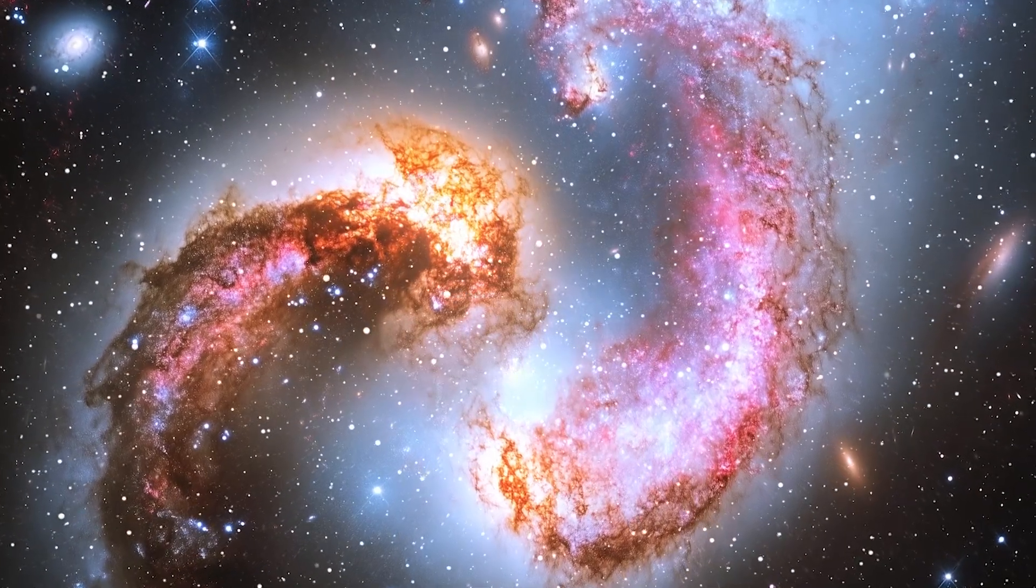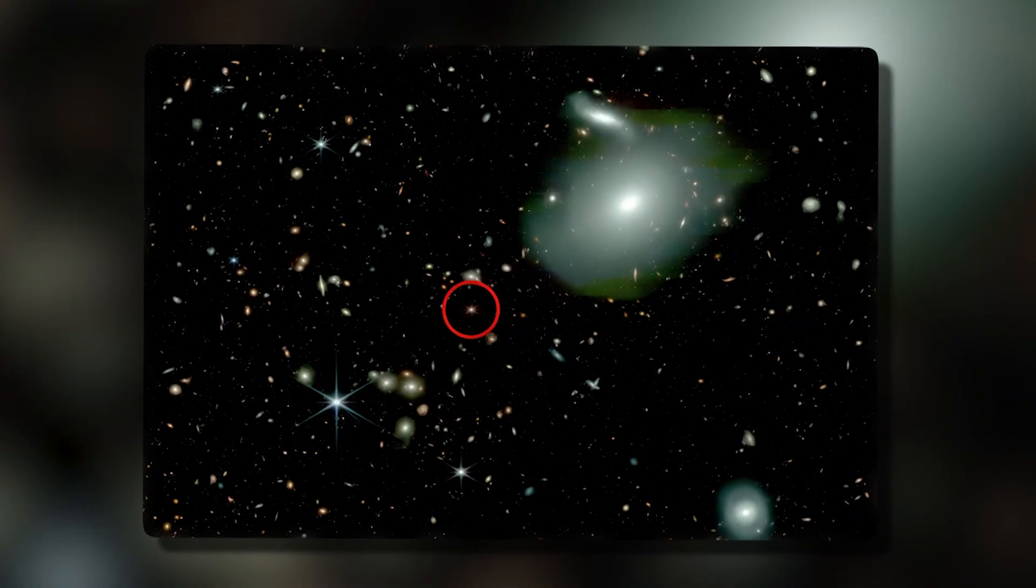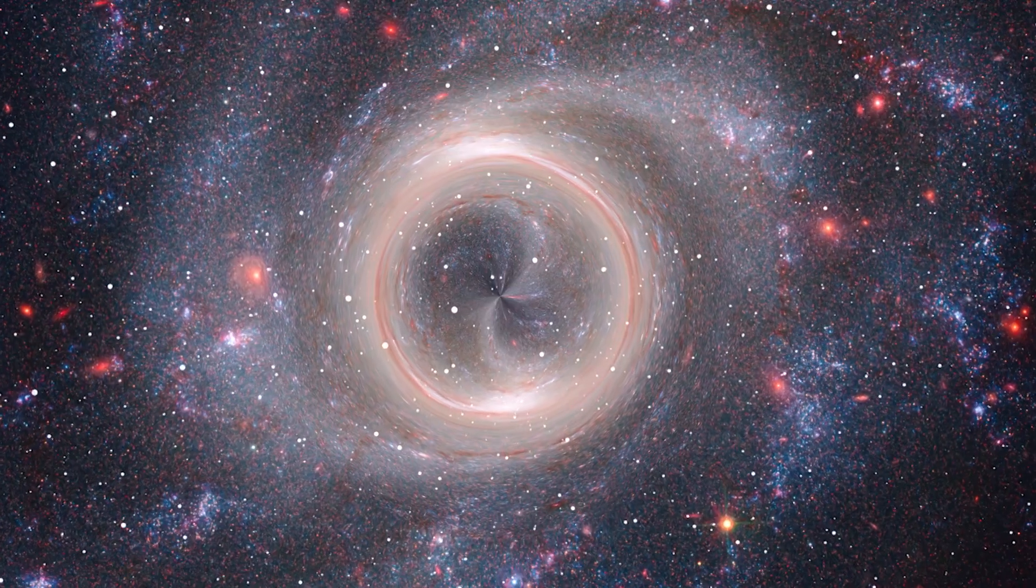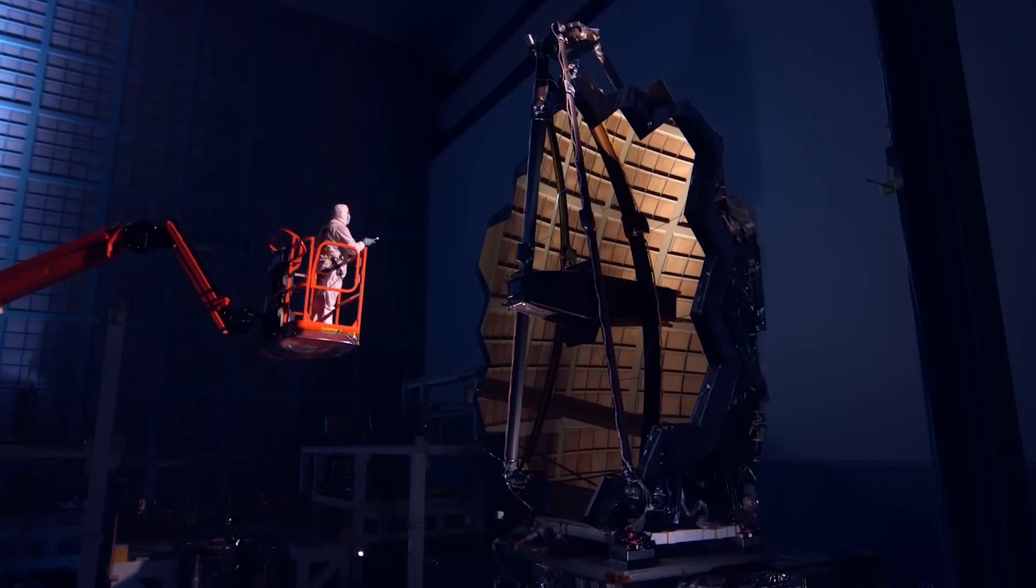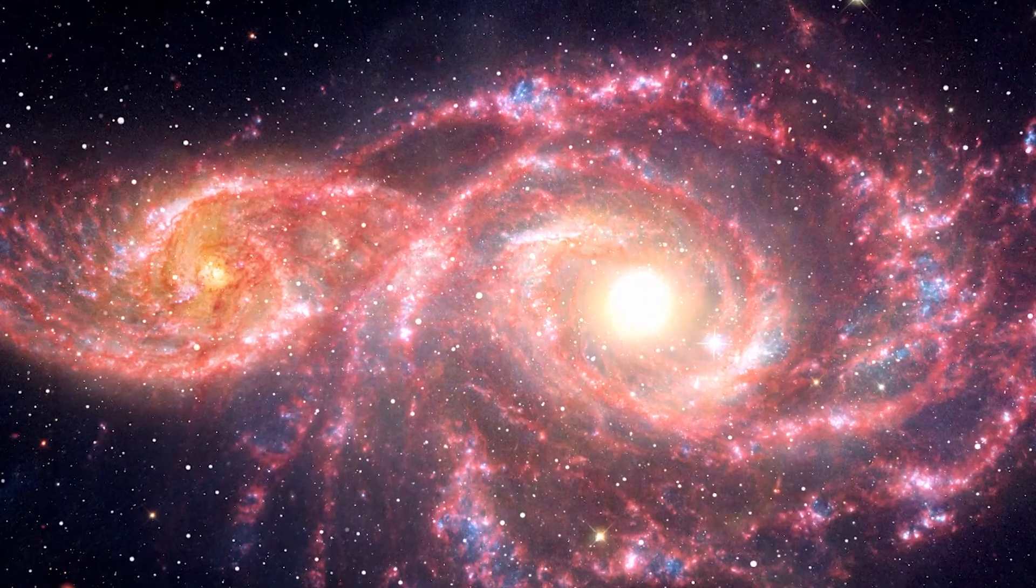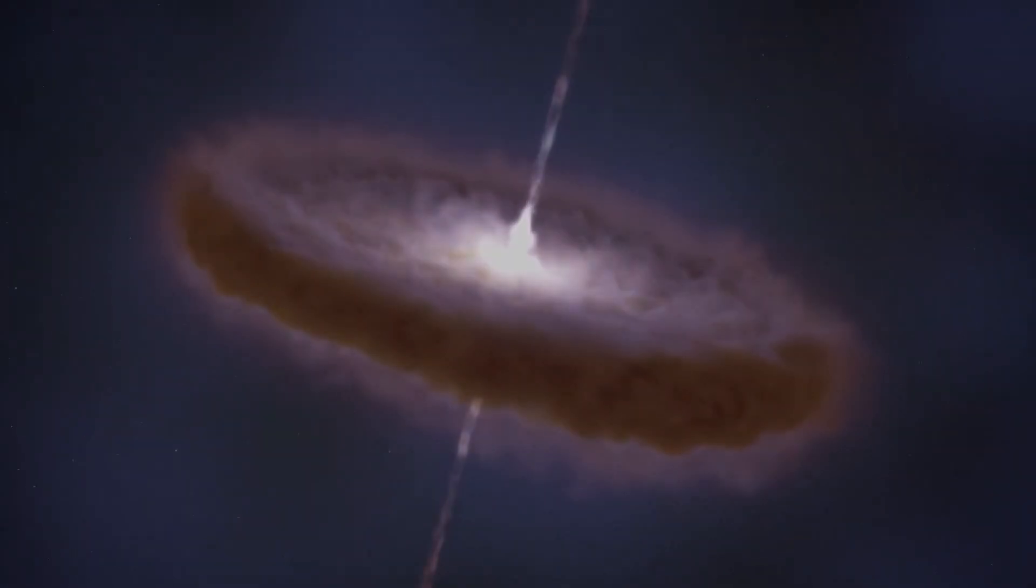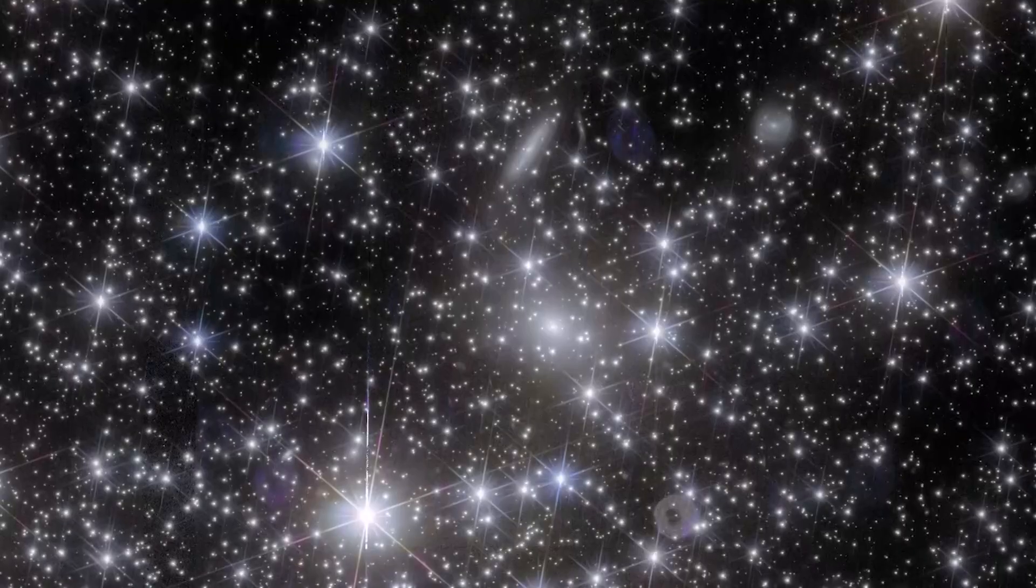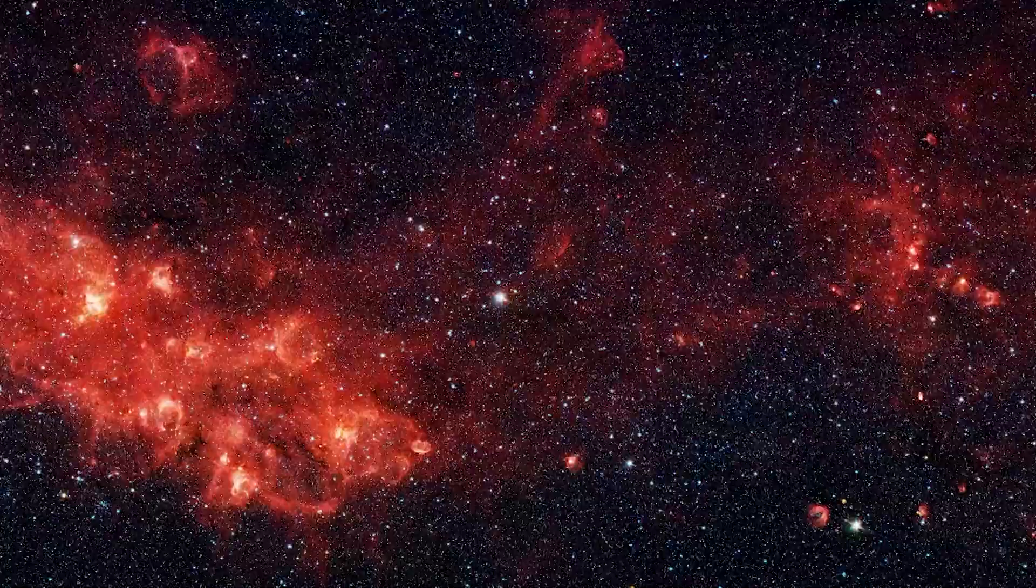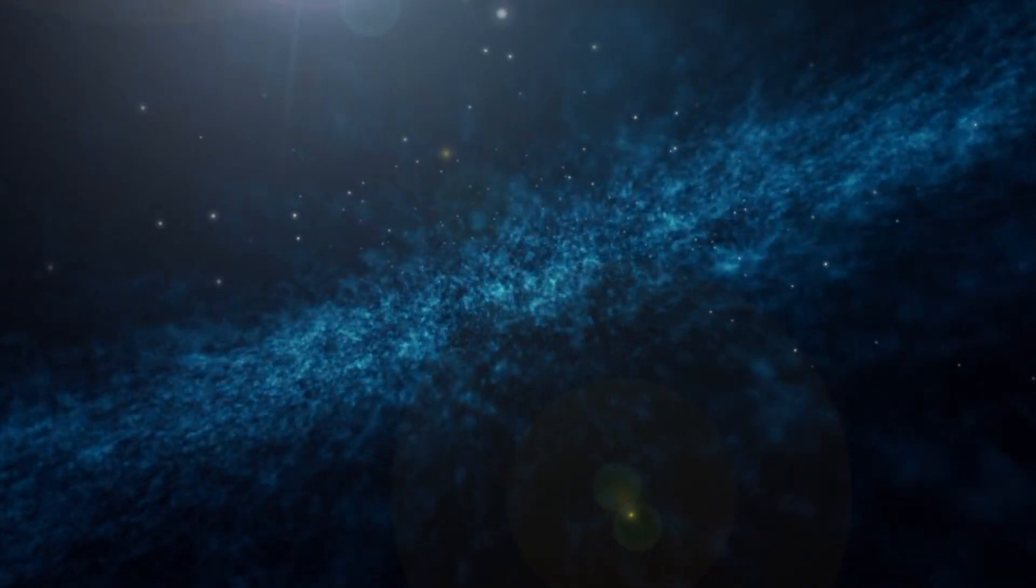It might also mean that the very definition of what constitutes a galaxy in the infant universe needs revisiting. Are these structures better described as hybrid proto-quasars, rapidly forming stellar black hole complexes rather than discrete star systems? JWST's data indicates that the morphology of GNZ-11 is surprisingly ordered despite the turbulence. Spiral arms, or at least coherent structures resembling them, are visible in the infrared data, challenging the idea that spiral galaxies only formed much later. The presence of such order amidst chaos could point to a natural, self-organizing tendency in gravitational systems, one that emerges faster than previously modeled in simulations of early galaxy formation.